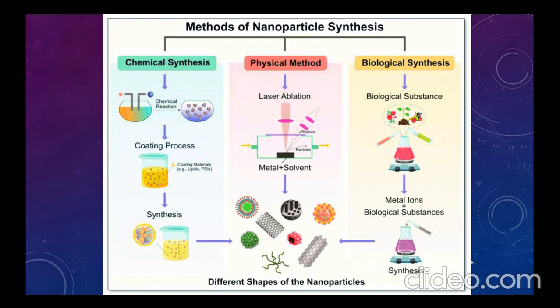In chemical synthesis, reactions involve the use of reducing agents to convert metal ions into metal atoms, or oxidizing agents to oxidize metal atoms back to metal ions. The choice of reducing or oxidizing agent depends on the specific synthesis and desired nanoparticle properties. Common chemical synthesis methods include sol-gel method, chemical precipitation, hydrothermal synthesis, chemical vapor deposition, and emulsion techniques.